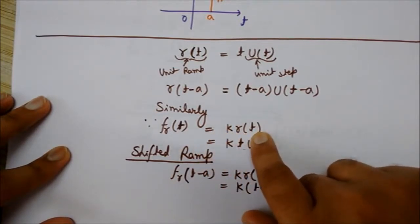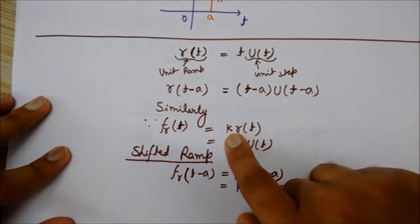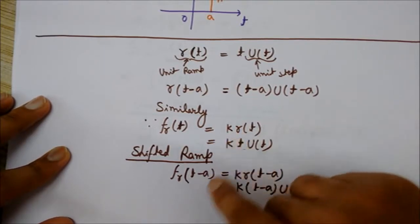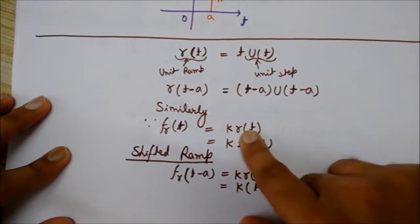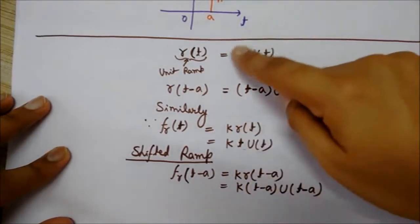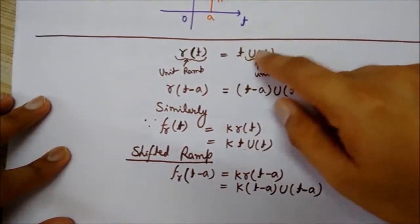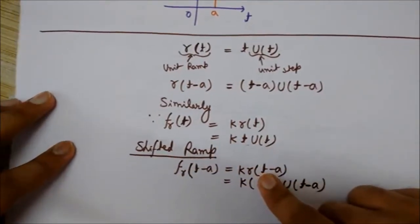Since k was 1 in case of unit ramp, you can see here k is the same, and r(t) is nothing but t*u(t). So fr(t) is k*t*u(t).